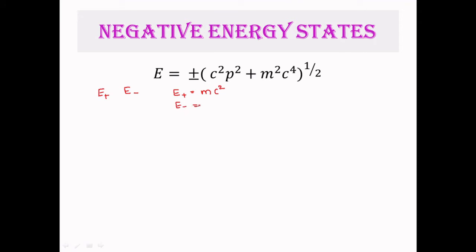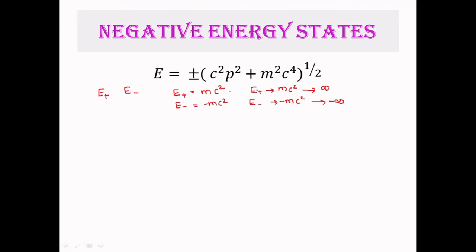Similarly for E−, when p equals zero, the value will be −mc². Now as p increases, the value of E+ will increase from +mc² to infinity, because as p tends to infinity this term tends to infinity. In a similar way, for E−, the value will start from −mc² and decrease to minus infinity as p increases.